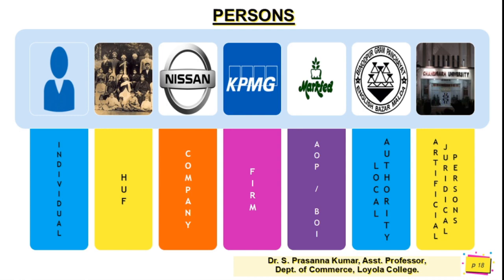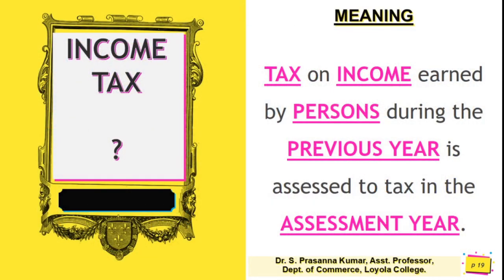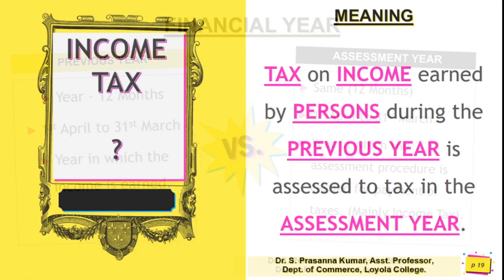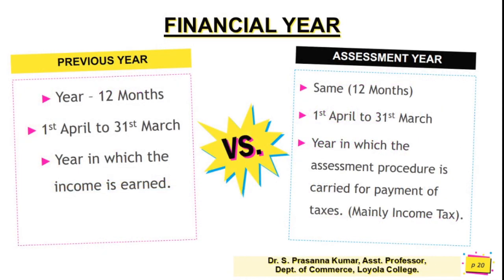The fourth and fifth keywords are previous year and assessment year. Both are considered financial years of 12 months, starting 1st April and ending 31st March. The year in which income is earned is called the previous year, and the year in which the assessment procedure is carried out for payment of taxes is called the assessment year.